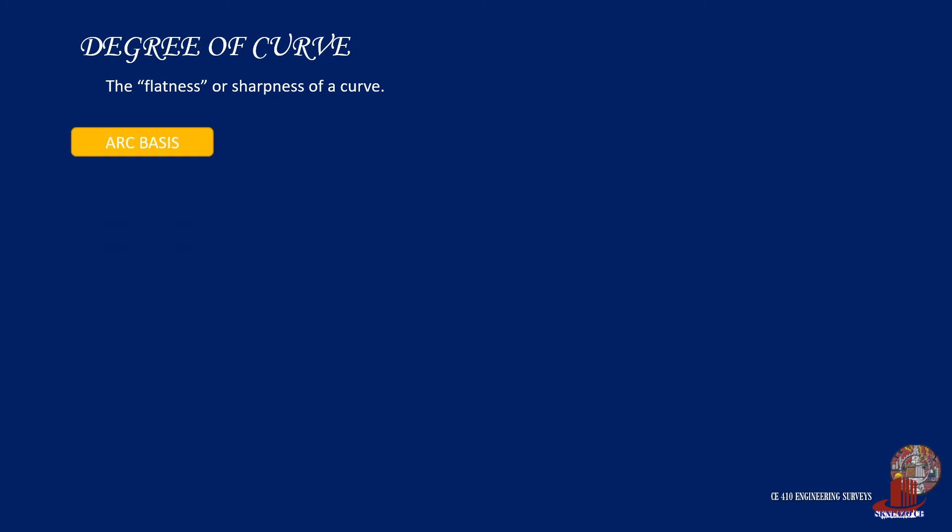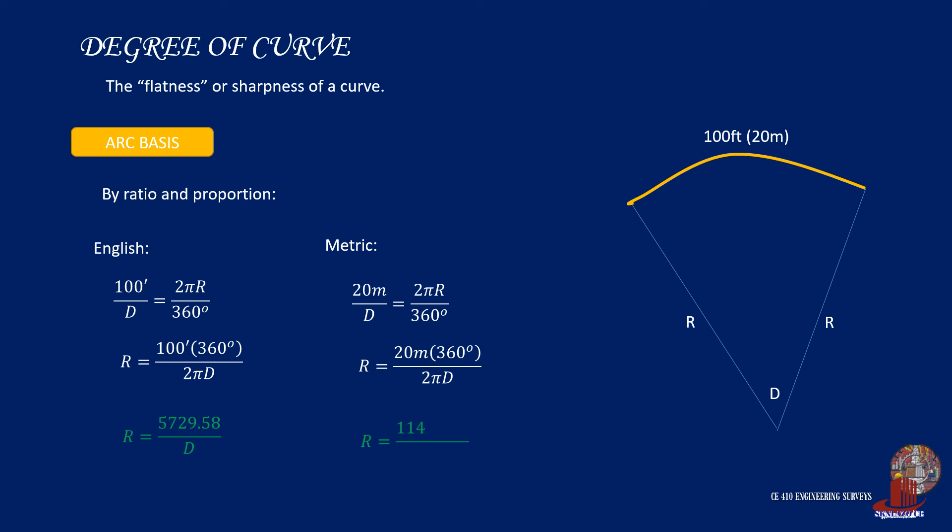We start with arc basis. Through this method, the degree of curve is projected from a curve of length 100 feet or 20 meters. By using ratio and proportion, we can use 100 feet is to the degree of curve as the circumference of the circle is to 360 degrees. So we can determine the radius R in terms of D as 5729.58 all over D. This same procedure is made for the metric units where we use 20 meters to replace 100 feet and the radius is taken as 1145.916 divided by D.